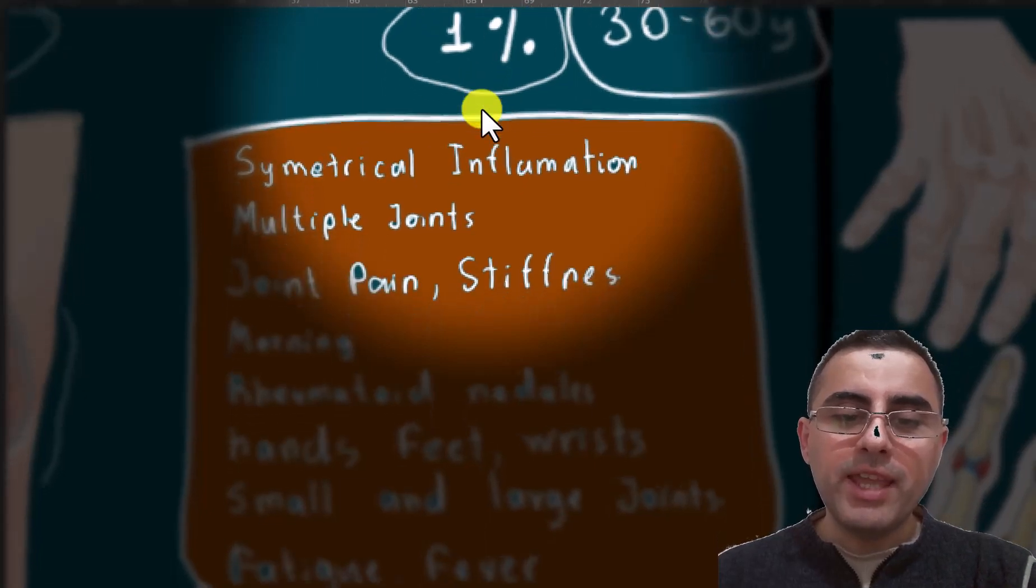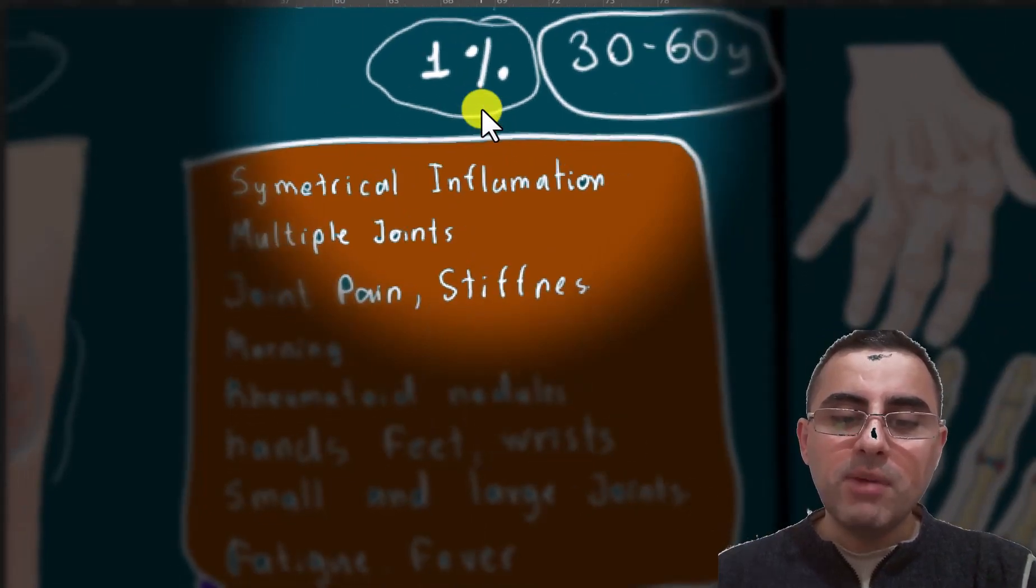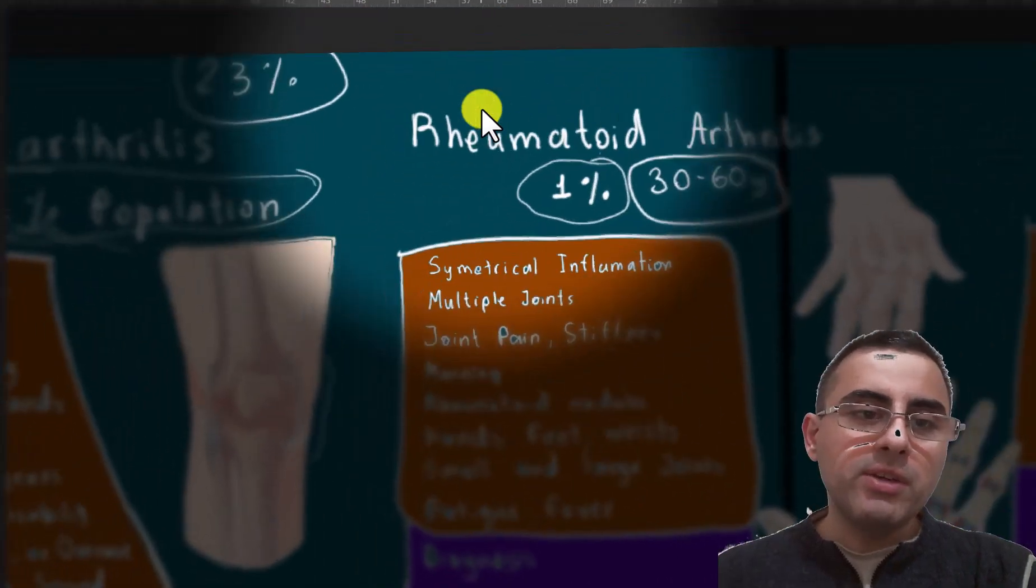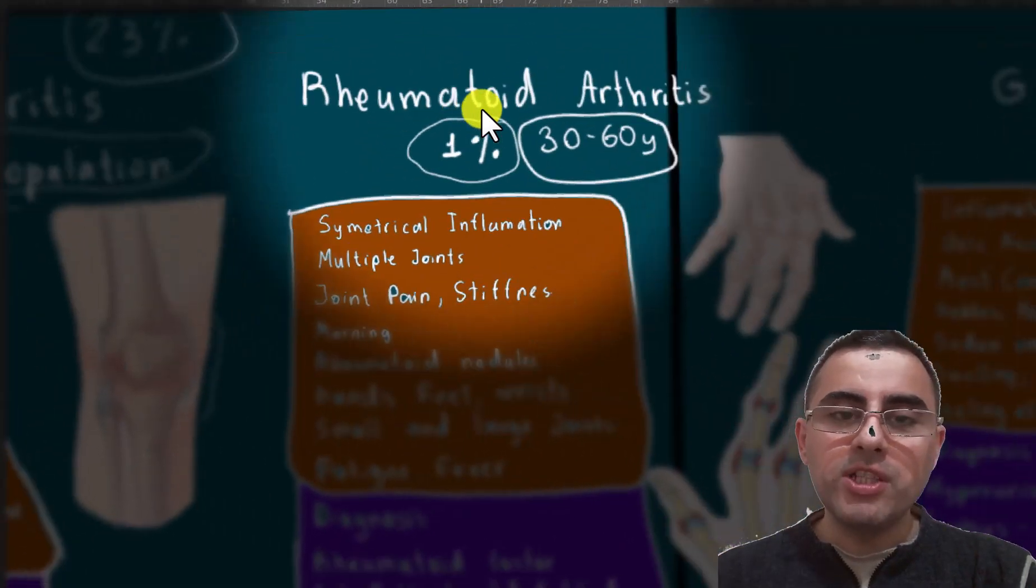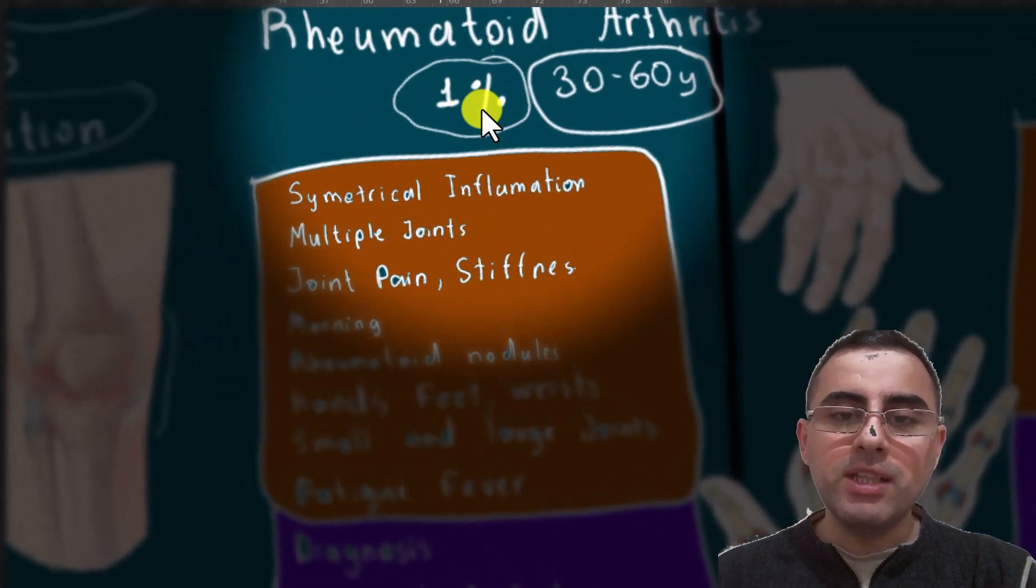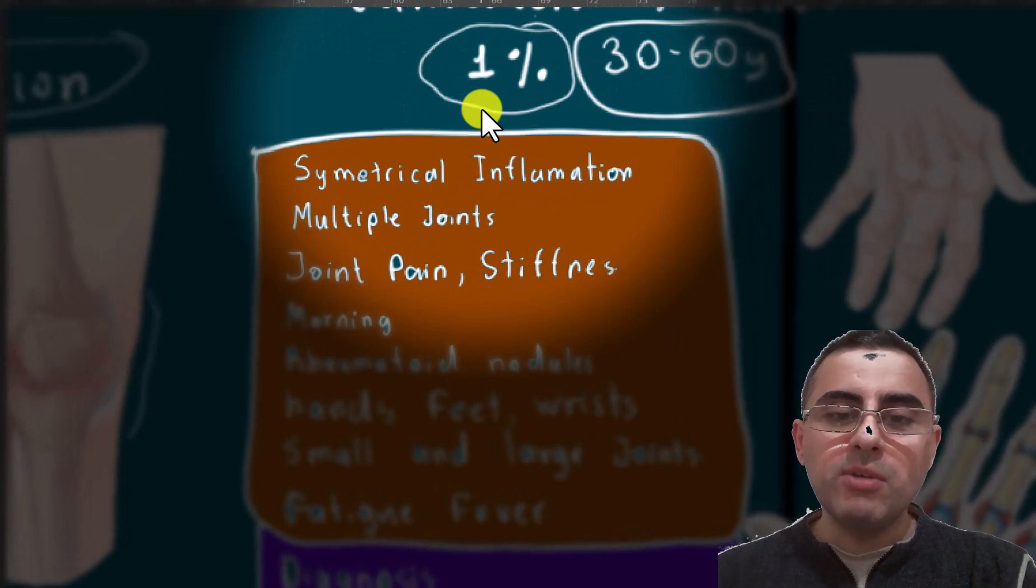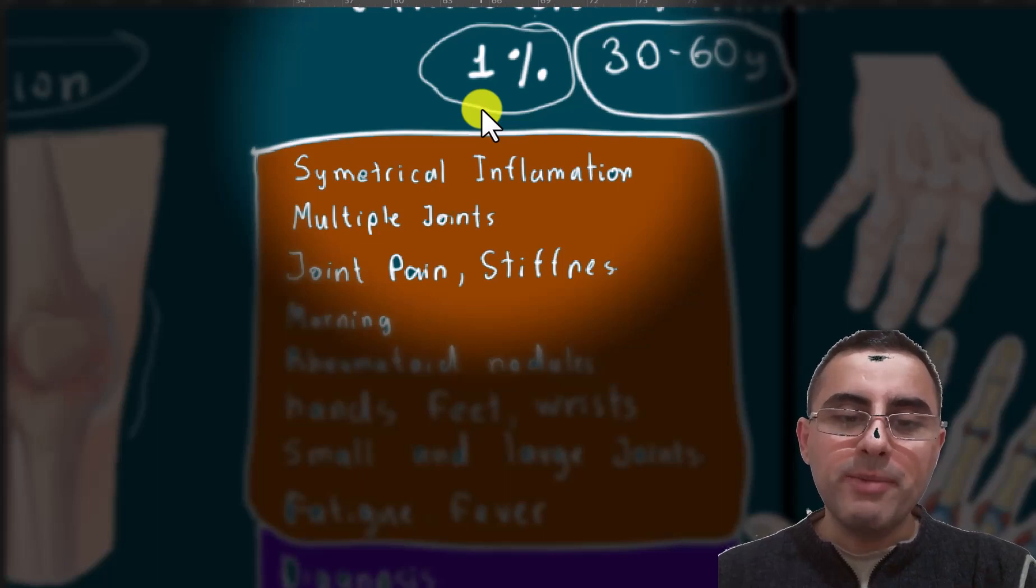Such joints usually are hands, feet, wrists, small and large joints. Usually osteoarthritis affects large joints, while rheumatoid arthritis affects all large and small joints. Most common symptoms are still pain, stiffness, and morning pain, also common for rheumatoid arthritis.